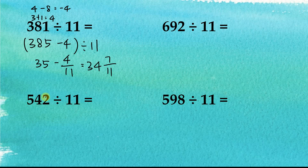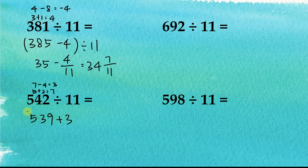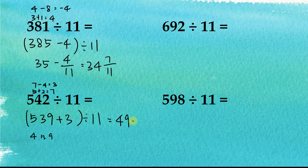Next: 542 divided by 11. The sum of the odd digits — 5 plus 2 — equals 7. And 7 minus the even digit 4 equals 3. To make the difference 0, we subtract 3 from this number to get 539, then add 3 back, so it becomes (539 plus 3) divided by 11. For 539 divided by 11: the sum is 14, which is greater than 9, so we split to get 4 and 13 and 9. The sum of 9 and 4 is 13, so 539 divided by 11 equals 49. Therefore the answer is 49 and 3 over 11.